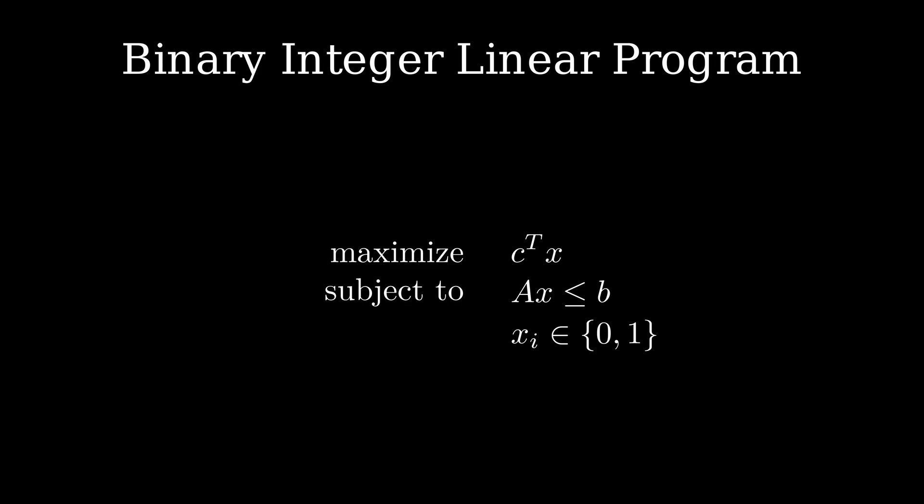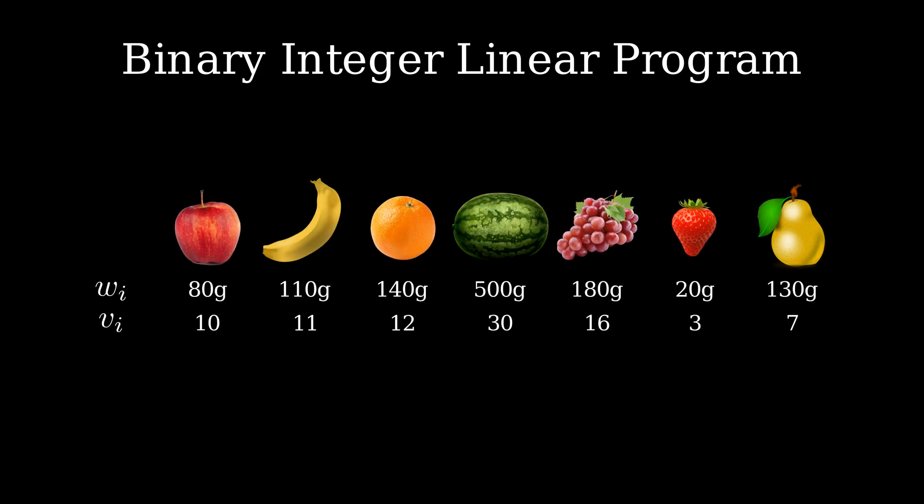Recall the knapsack problem where we have capacity c and n items. Each item has a value v and a weight w. We try to maximize the value of the selected items with regards to our weight limit c. How could we formulate this as an integer linear program?